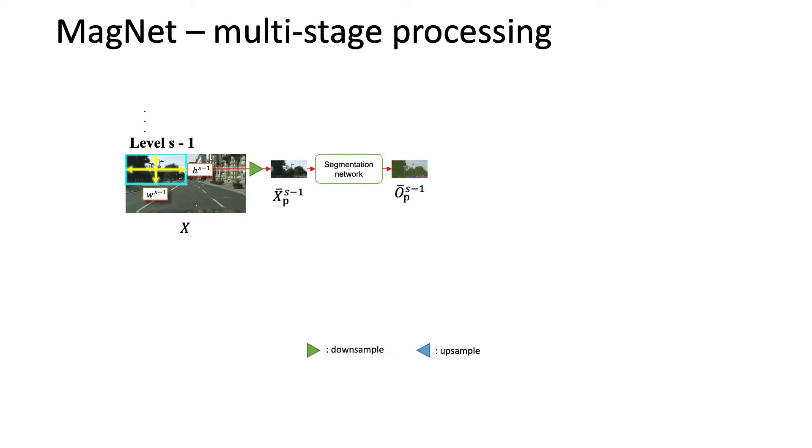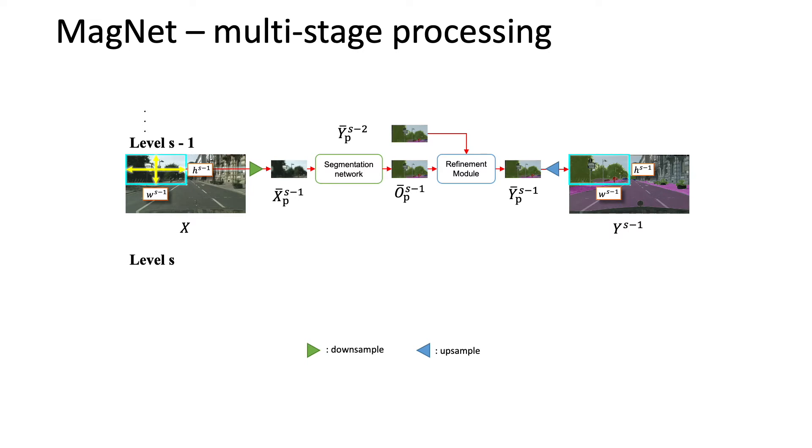The refinement segmentation map is produced by the refinement module with both information from, first, scale-specific prediction and second, the corresponding cumulative segmentation from previous scales. The process applies to all patches before up-sampling and ensembling to reconstruct the high-resolution segmentation map. In the next scale level, we apply the same strategy on smaller patches to obtain more fine-grained details.